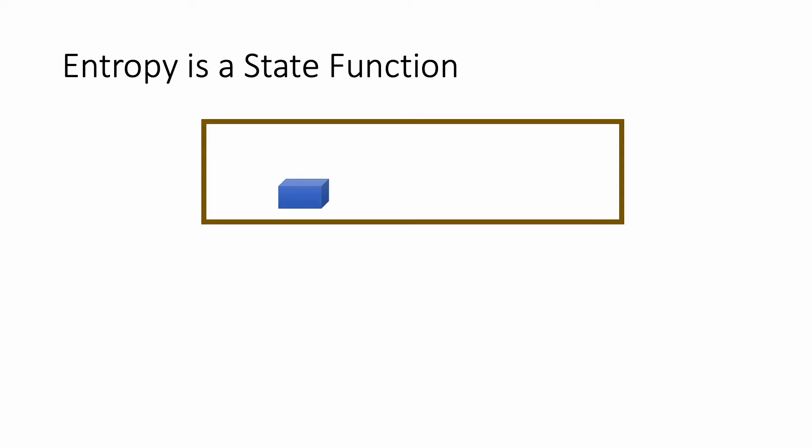So if you imagine an ice cube, and you imagine it melting, you know that the entropy of that system is going to change. In the ice cube, the water molecules are very ordered. In a puddle of water, they're not going to be very ordered. And so the entropy would increase there.